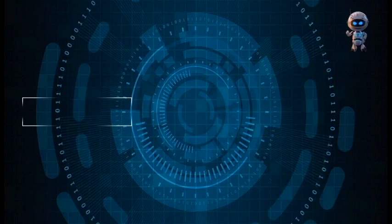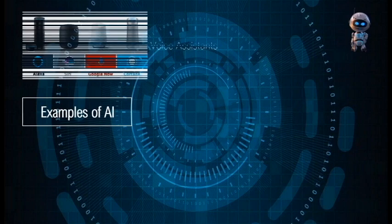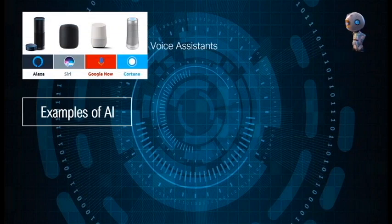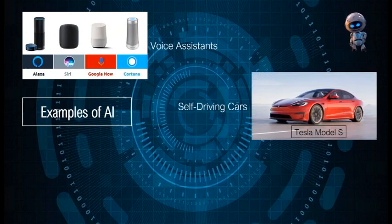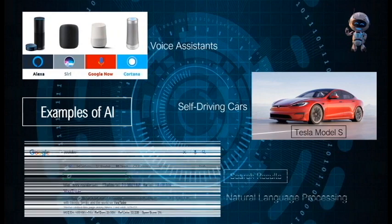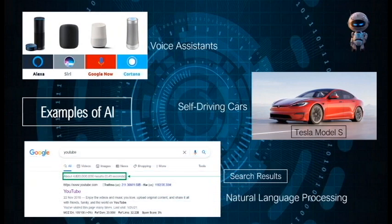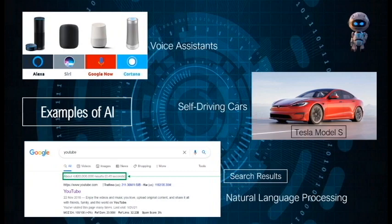Examples of AI include voice assistants like Cortana, Alexa, Siri, and Google Assistant; self-driving cars like Tesla Model S and Google's Waymo project; and natural language processing tools such as search results and predictive text.